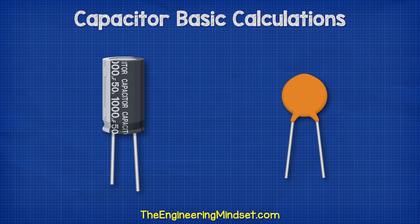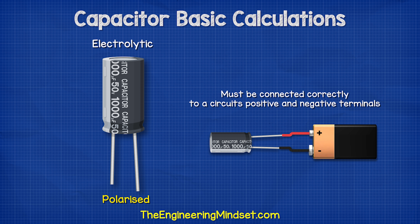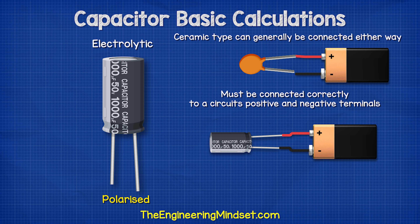Capacitors typically look something like this. We have an electrolytic and a ceramic type capacitor. The electrolytic is polarized, meaning one side must be connected to the positive and the other side must be connected to the negative. The ceramic type can generally be connected either way.